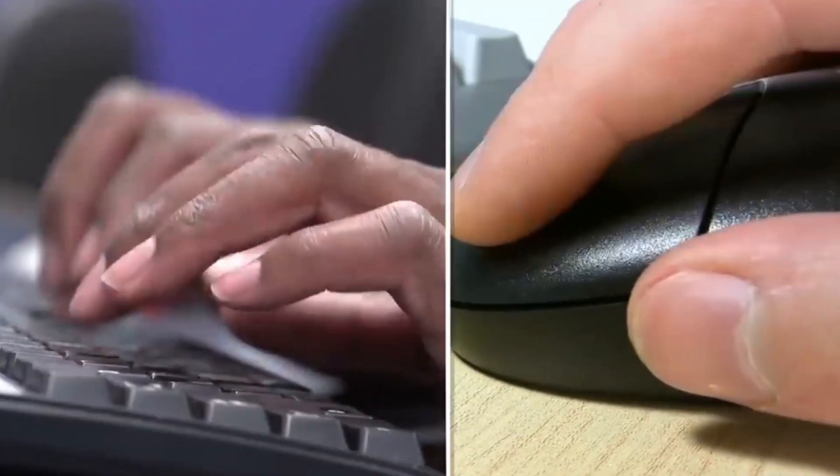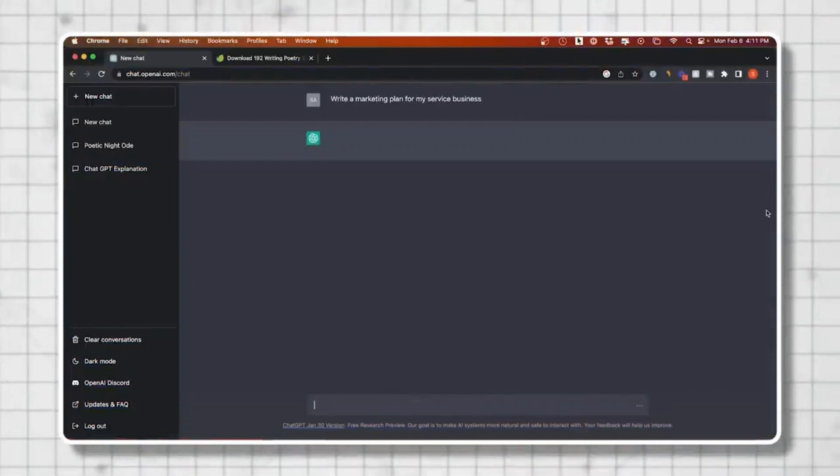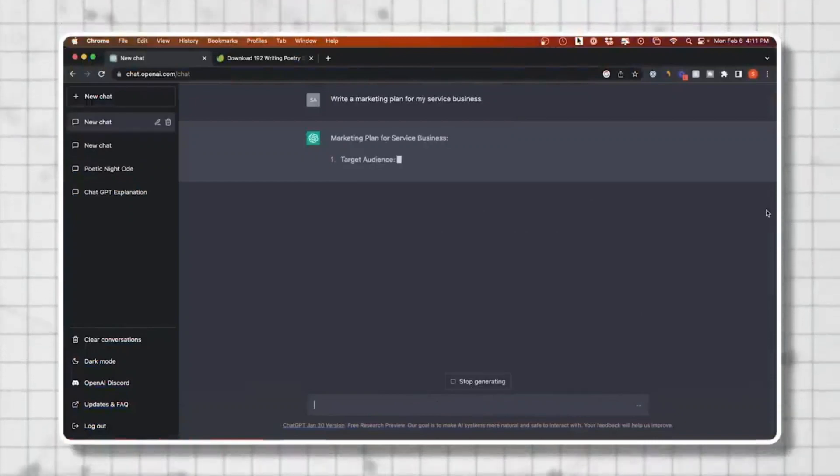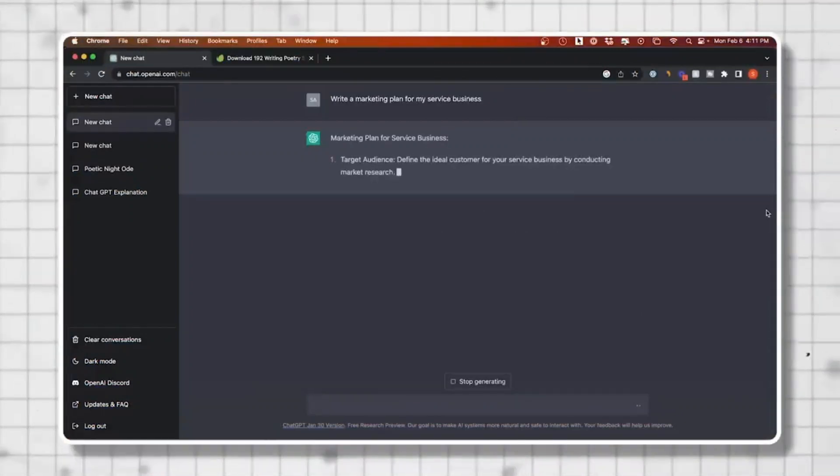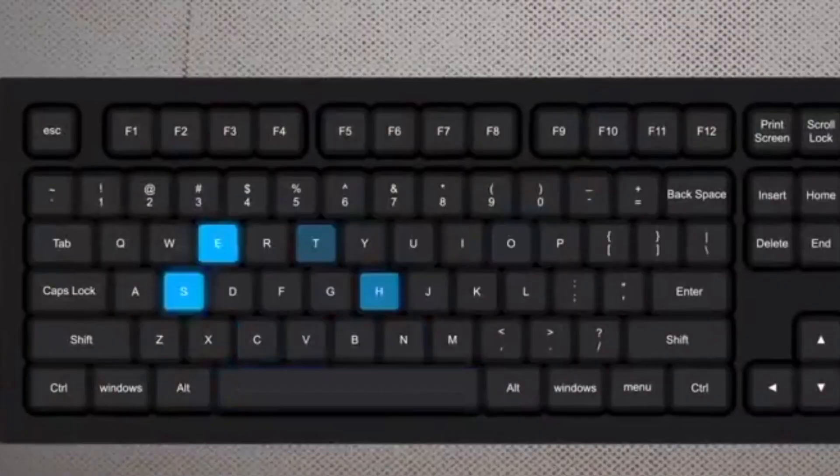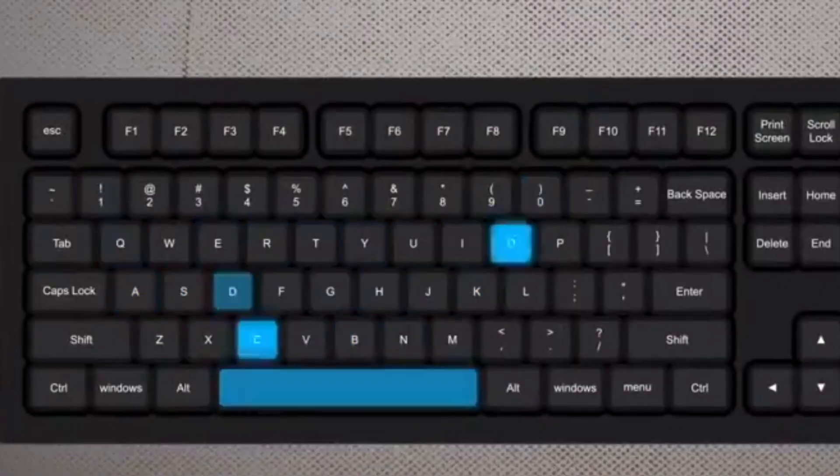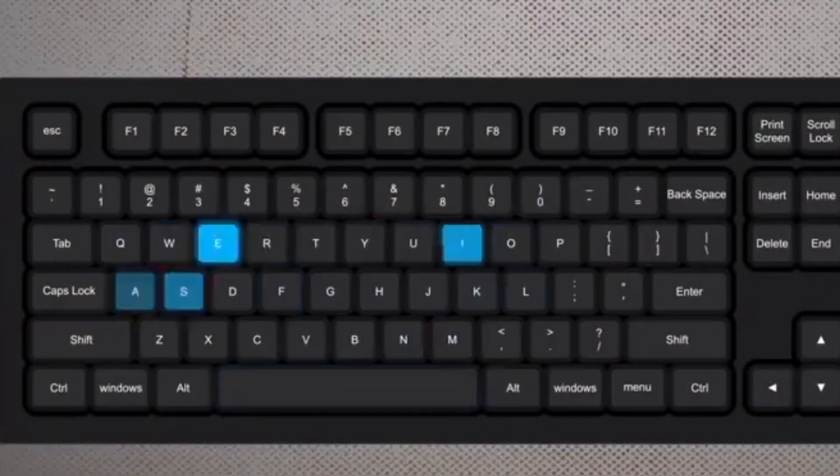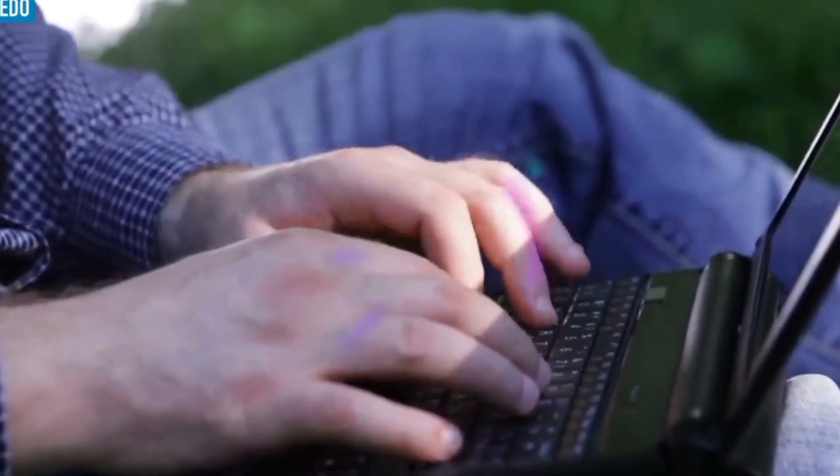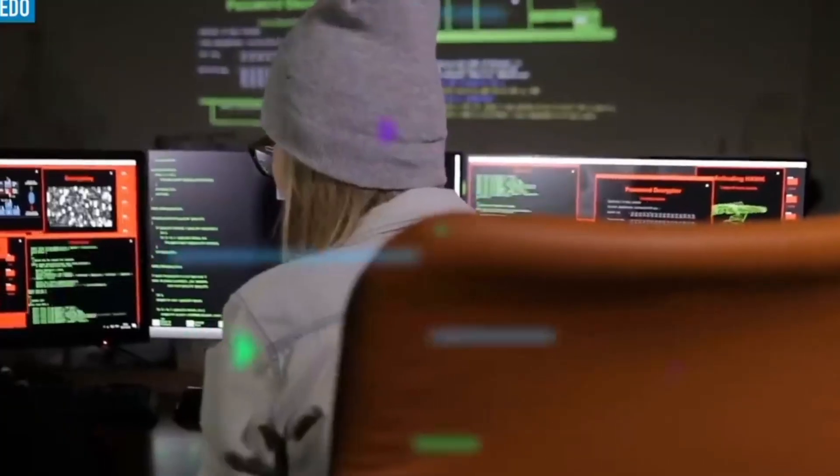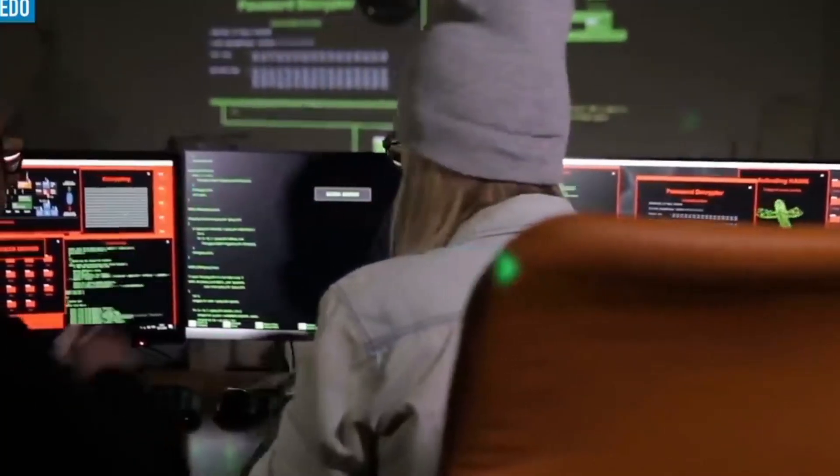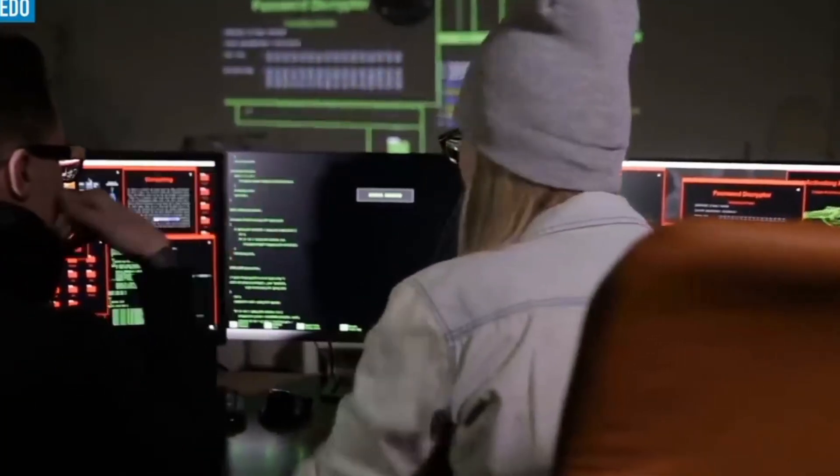In spite of the fact that it offers fast solutions, the ChatGPT code interpreter might persuade programmers not to engage in the iterative process of trial and error, which is essential to the development of programming skills. This can make it more difficult to develop skills in problem-solving and creative thinking, both of which are crucial qualities for programmers to possess in order to effectively tackle unique issues.